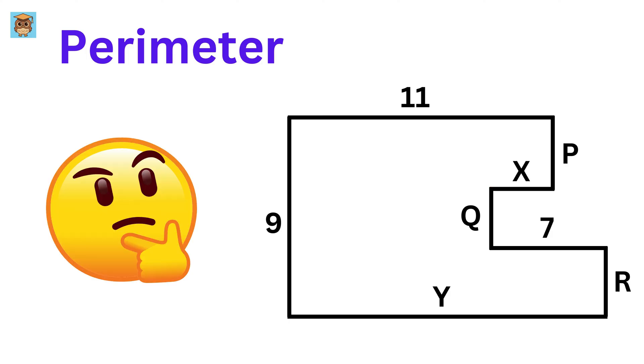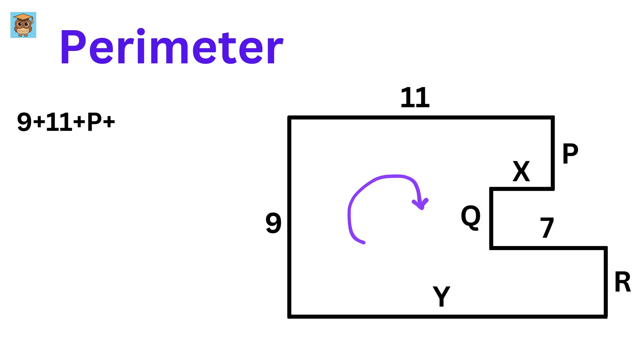So what will be the perimeter of this polygon? Let us move this way. So, it will be 9 plus 11 plus P plus X plus Q plus 7 plus R plus Y. This will be equal to 27 plus, put this part inside a bracket, P plus Q plus R, and then put this X plus Y inside a bracket.